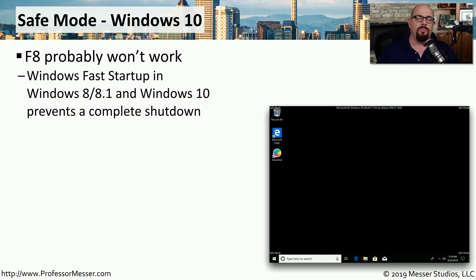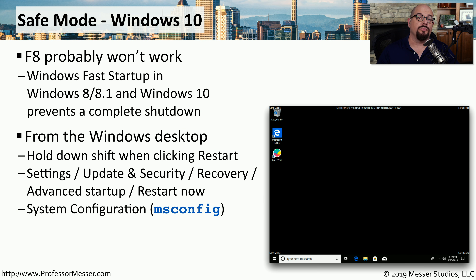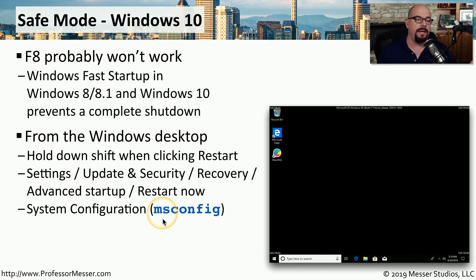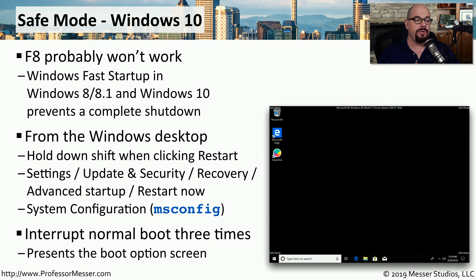In Windows 8 and Windows 10, pressing F8 during startup may not allow you access into the startup options. This is because of an option called Fast Startup, which does not shut down your system completely — when you turn it back on, it's recovering from a hibernate mode rather than starting the boot process from the beginning. If you're at the Windows desktop and would like to restart your system to show those options, you can hold down the Shift key when clicking Restart, or choose Settings, Update and Security, Recovery, Advanced Startup, and Restart Now. There's also an option in MS Config. If you can't boot the OS at all, you can simply interrupt the boot process three times, and after the third time the boot options page will appear.